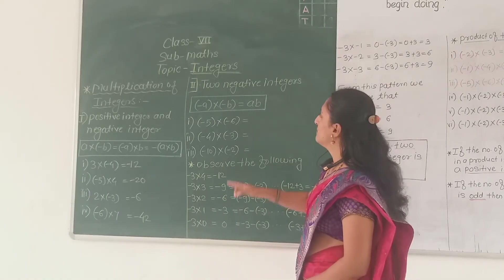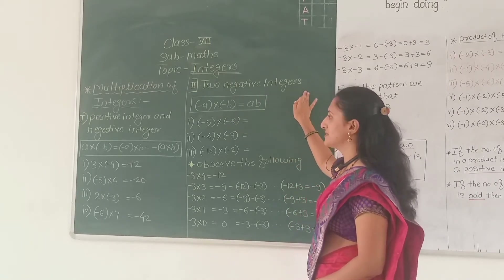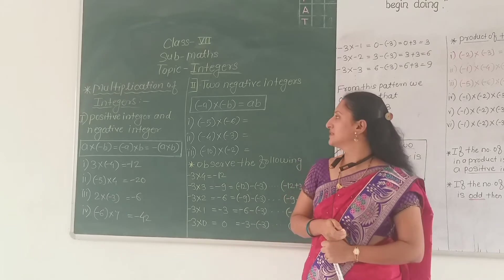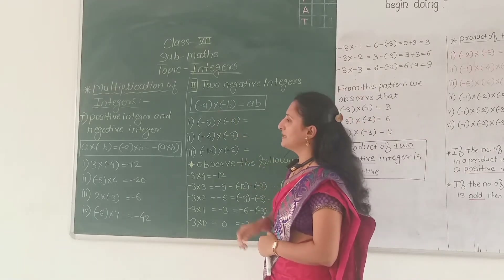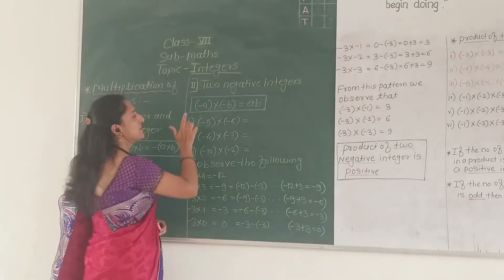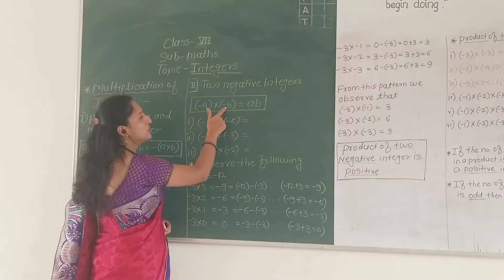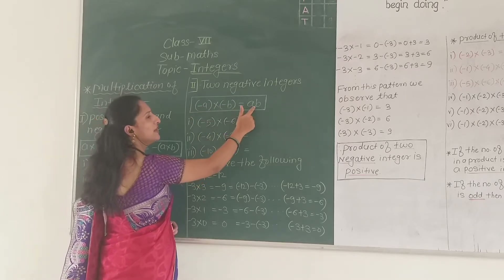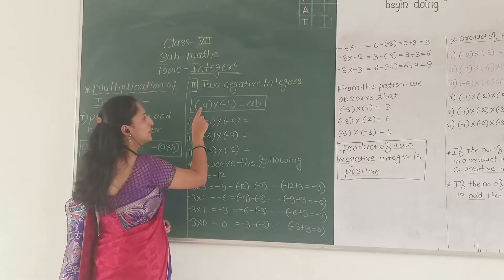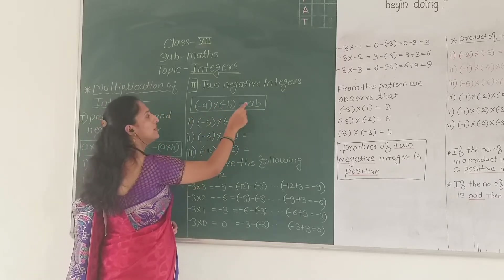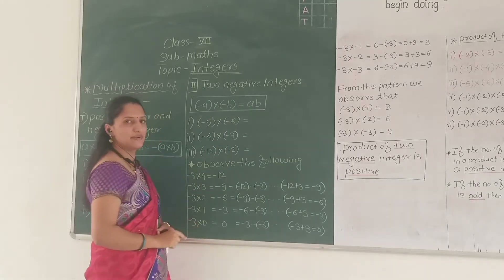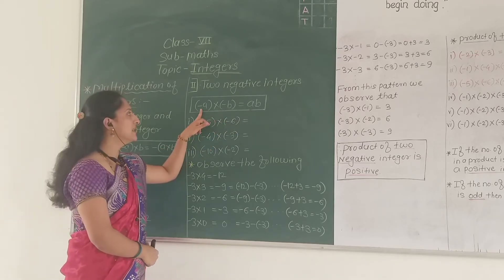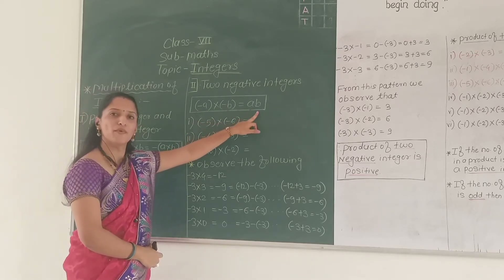Now, multiplication of two negative integers. When both the integers are negative, let us look at what will happen. We have to multiply two negative integers — that is negative A into negative B. Both the integers are negative, so their product will be positive. Whenever two integers are negative, their product will be positive. That means in multiplication, negative into negative is positive.